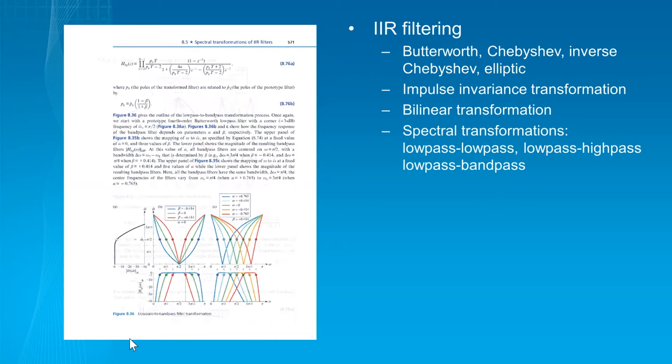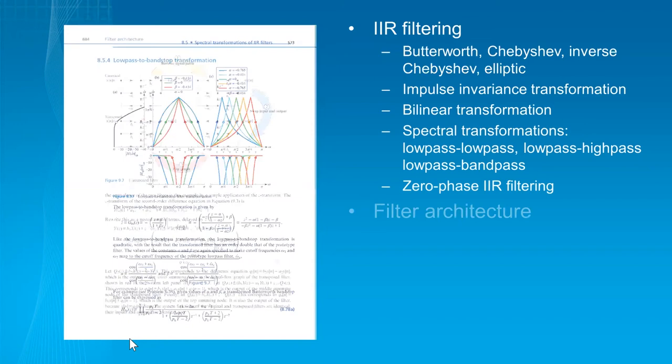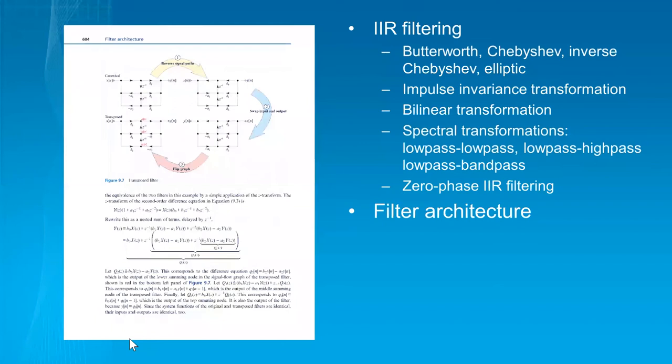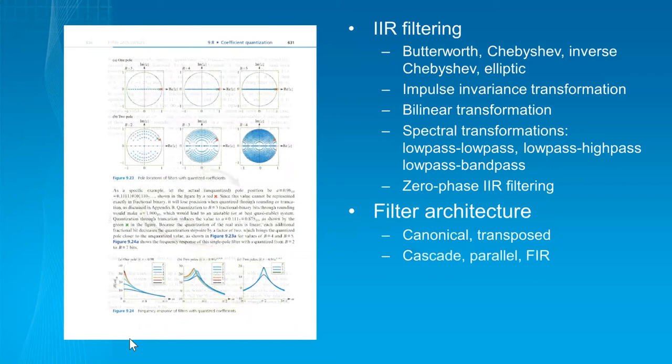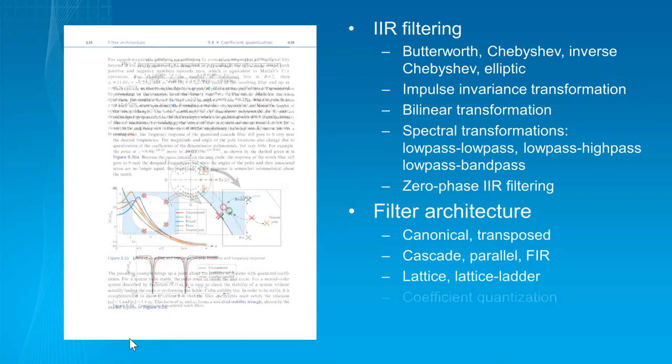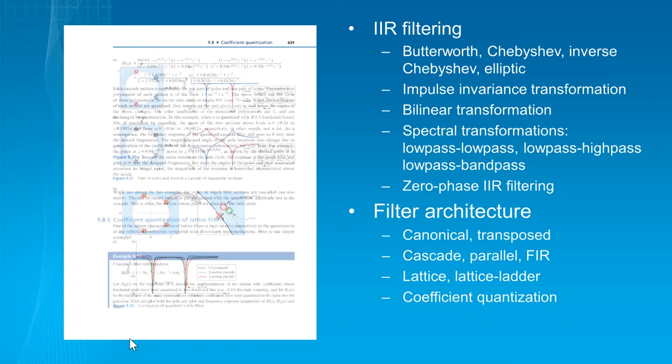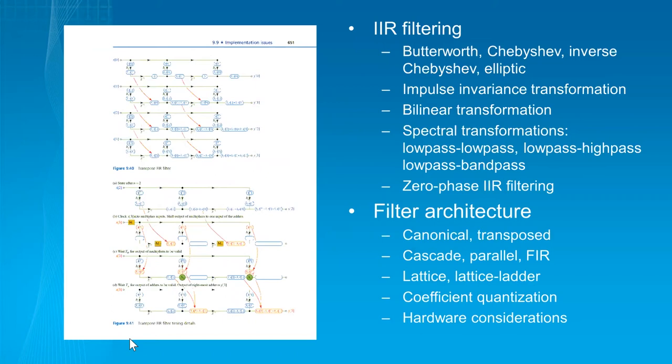Filter architecture: canonical and transposed filters, cascade, parallel. There is an extensive discussion of lattice and lattice-ladder and their applications in the later chapters, and also coefficient quantization, trying to make coefficient quantization easy. And finally, I felt it was necessary to talk about considerations of implementations of filters, the architecture that you would use, for example, in VLSI, why you would, for example, favor transposed architectures, self-pipelined architectures.